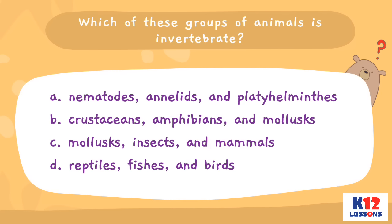Choose the letter of the best answer. Which of these groups of animals is invertebrate? A. Nematodes, annelids, and platyhelminths. B. Crustaceans, amphibians, and molluscs. C. Molluscs, insects, and mammals. D. Reptiles, fishes, and birds.